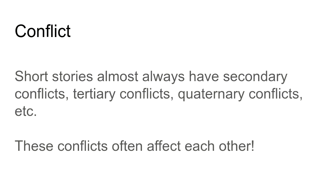Short stories, even if they're really short like The Story of an Hour, are almost always going to have multiple conflicts at work within them — secondary conflicts, tertiary conflicts, third-level conflicts, quaternary fourth-level conflicts, and so on. There could be conflicts happening all through a short story. And of course these conflicts usually will affect each other. A secondary conflict is perhaps going to play an important role in shaping the primary conflict, and vice versa.